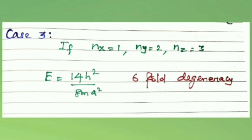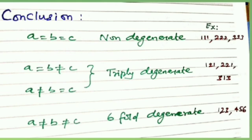One important conclusion: if a = b = c (a cubic box), then quantum states with the same sum nₓ² + nᵧ² + n_z² will have the same energy. When a = b = c, there can be non-degenerate states, doubly degenerate, or triply degenerate states depending on the quantum numbers. For all different quantum numbers, six-fold degeneracy can occur.